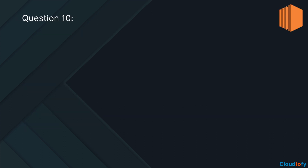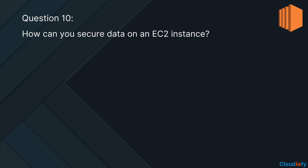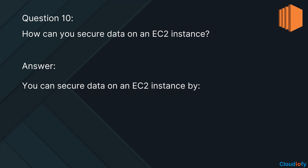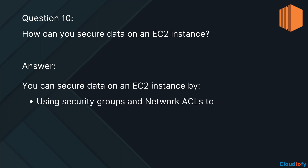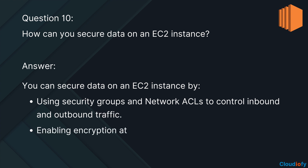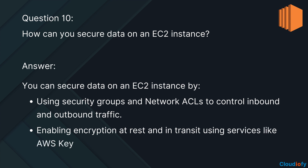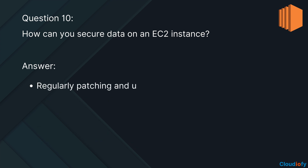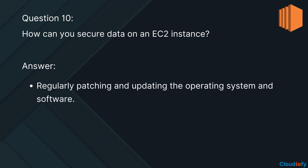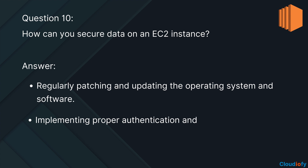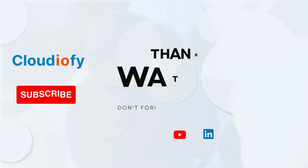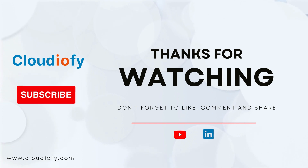The next question is: how can you secure data on an EC2 instance? You can secure data on an EC2 instance by using security groups and network ACLs to control inbound and outbound traffic, enabling encryption at rest and in transit using services like AWS Key Management Service and SSL/TLS, regularly patching and updating the operating system and software, and implementing proper authentication and access controls. That's it for our video on AWS EC2 interview questions and answers.